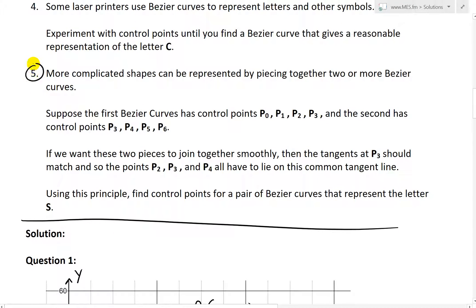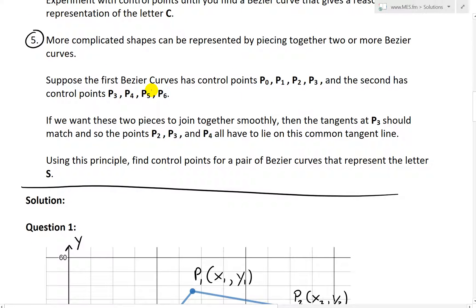And now in question five, we'll look at this question right here, which states, more complicated shapes can be represented by piecing together two or more Bezier Curves. So suppose the first Bezier Curve has control points P0, P1, P2, P3, and the second one has control points P3, P4, P5, and P6. Basically, these are connected by this P3 right here. So they both have a P3 here.